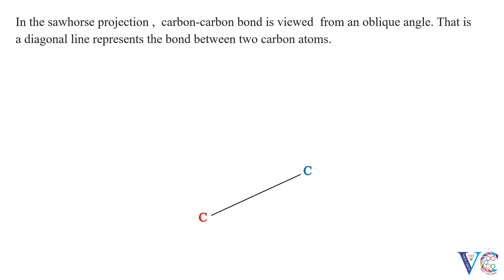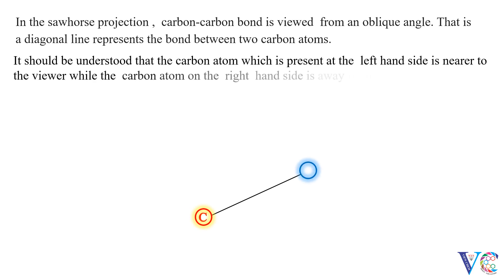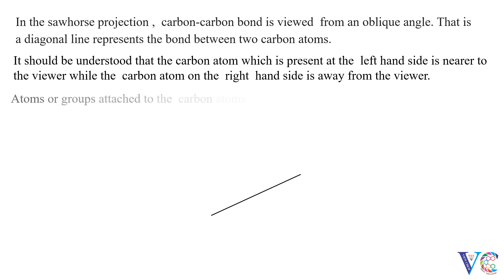It should be understood that the carbon atom which is present at the left-hand side is nearer to the viewer, while the carbon atom on the right-hand side is away from the viewer. Atoms or groups attached to the carbon atoms should be drawn at an angle of 120 degrees.